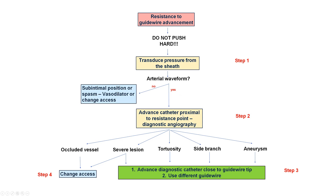Assuming there is a good arterial waveform, the next step is to advance a catheter proximal to the area of resistance and perform diagnostic angiography. This can demonstrate the reason, which can be occlusion of the vessel — in which case change of axis is indicated — or it might show a severe lesion, in which case one can try to go through the lesion, potentially treat it, or change axis. There may be tortuosity, typically solved using various guide wires supported by a catheter. The wire could go into a side branch and be pulled back and redirected, or the patient might have an aneurysm requiring manipulation of various wires.